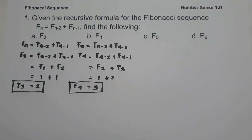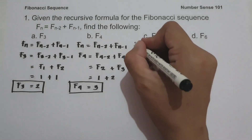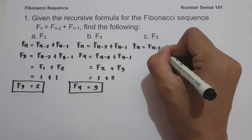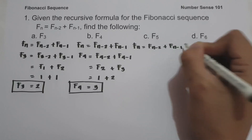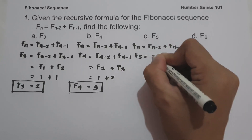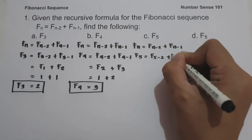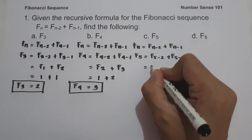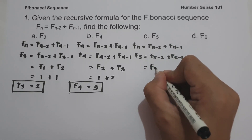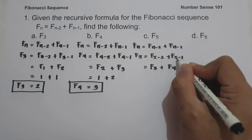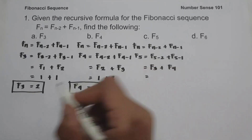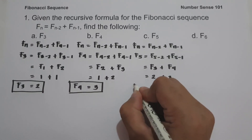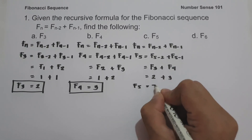On letter C, we are going to find the value of f(5). Using the recursive formula, f(5) = f(5-2) + f(5-1), which gives us f(3) + f(4). Since f(3) = 2 and f(4) = 3, the value of f(5) is 2 plus 3, which is 5.